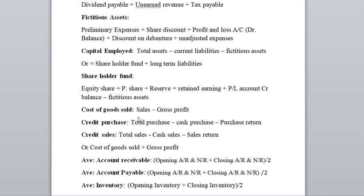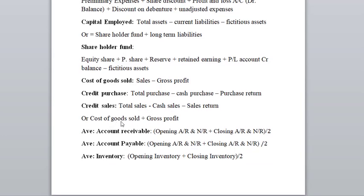Then: cost of goods, sales, gross profit minus. Credit sales, total sales, cash sales, return minus. Cost of goods, gross profit, gross profit divided by sales.